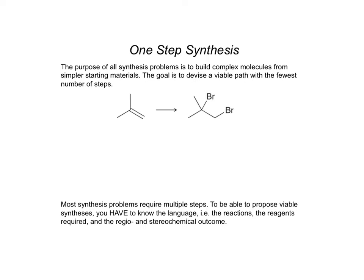Whenever we're dealing with a synthesis, you'll be given your starting materials and shown your target compound — what you're trying to produce. What you're responsible for figuring out is: how do we get from the starting compound to the target product? What reagents, in what order, and what considerations are needed?